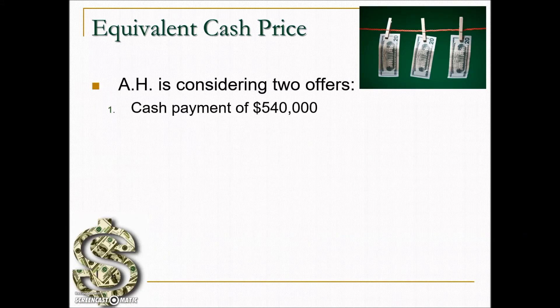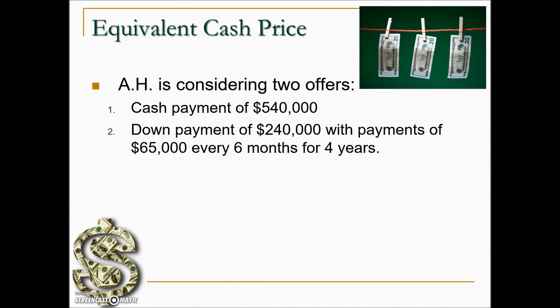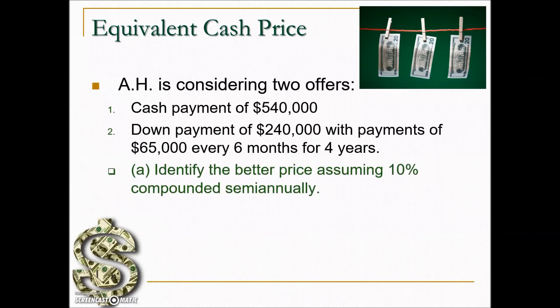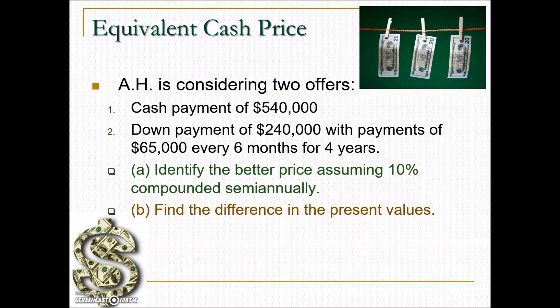A company is considering two offers: a cash payment of $540,000, or a down payment of $240,000 with regular payments of $65,000 every six months for four years. To make an informed decision we need to bring both of these into present value. We need to know how the money would be invested — interest is compounded semi-annually at a rate of 10%. The second part of the problem asks us to find the difference between the present values.